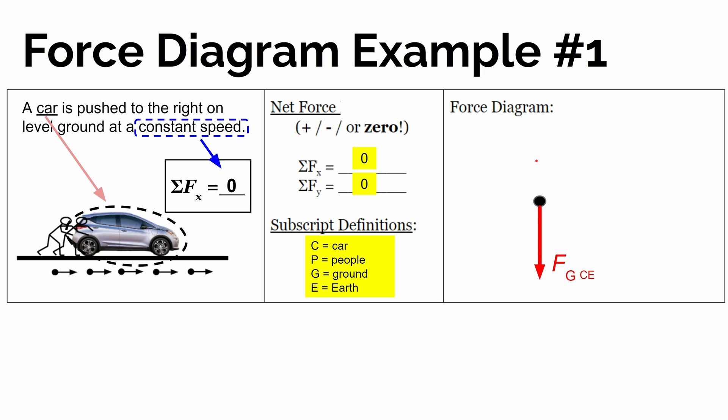there has to be a positive upward force that's equal in size and opposite in direction to the gravitational force, as long as that's the only other vertical force. So what force is upward on the car — a push or pull — that's balancing out the gravitational force?